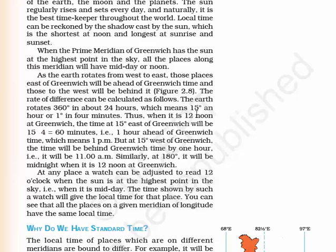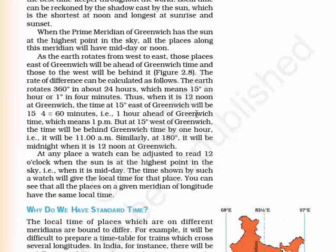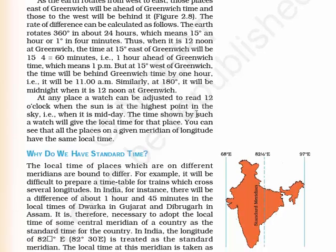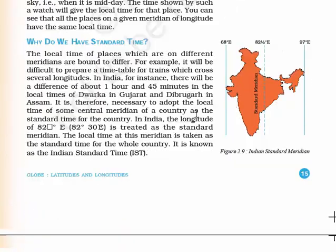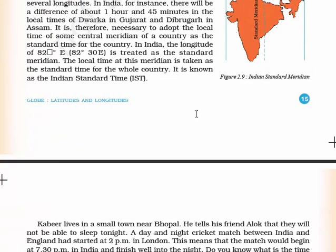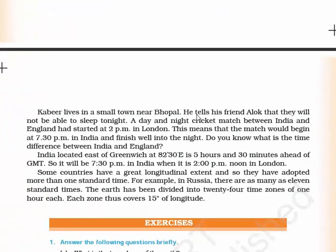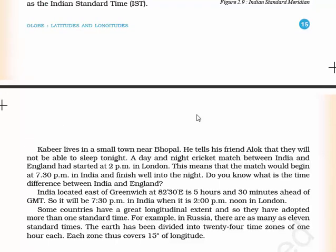As the Earth rotates from west to east, those places east of Greenwich will be ahead of Greenwich time and those to the west will be behind it. That's why India is 5.30 hours ahead of Britain. That's why a UK working shift in India is from 2 pm to 10 pm, so that their logout time would be 5.30 pm.